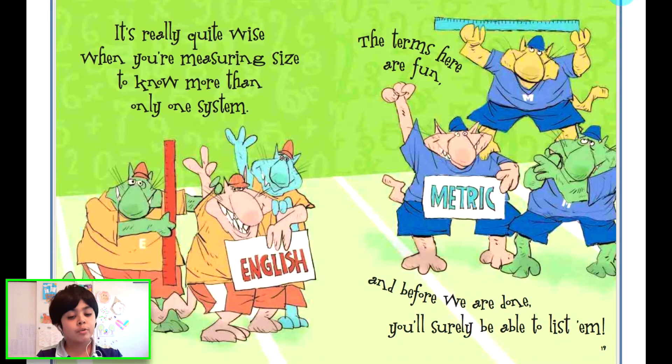It's really quite wise when you're measuring size to know more than only one system. The terms here are fun and before we are done you'll surely be able to list them. You see, there's English and metric. English means like in the USA, all the things are measured differently. In USA you would say miles, but all around the world they use metric measurements, which is like they would use kilometers. Here in USA they use just one mile. That's English: one mile. And then metric is kilometers.